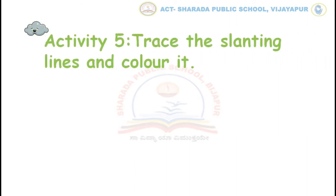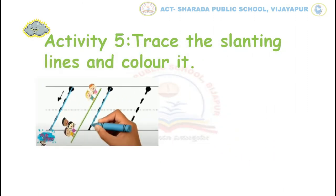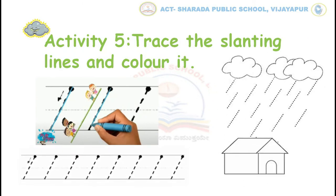Shall we move to the 5th activity? This is trace the slanting lines and colouring activity. In this activity, trace the dotted lines in the given picture. Start from the dot and follow the arrow, as shown here, to complete this activity.